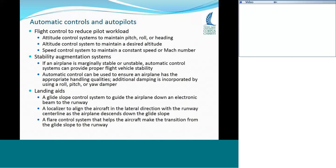If the aircraft is unstable, it will start to oscillate and the oscillation amplitudes will get bigger and bigger. The stability augmentation system basically adds damping — a roll damper, pitch damper, or yaw damper. This ensures the airplane has the appropriate handling qualities.